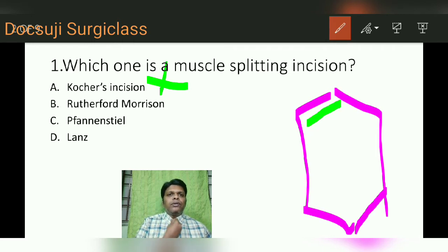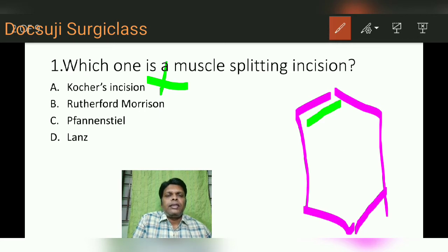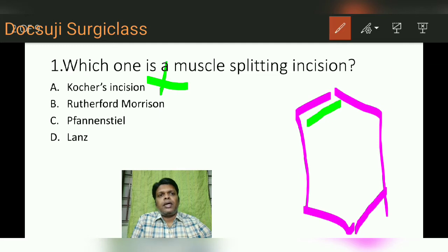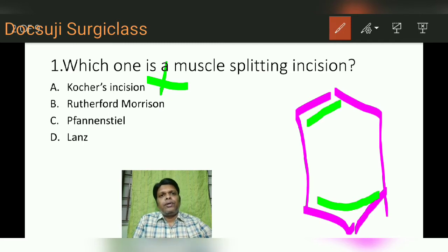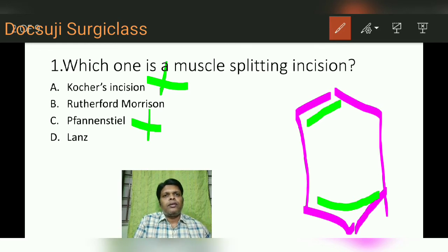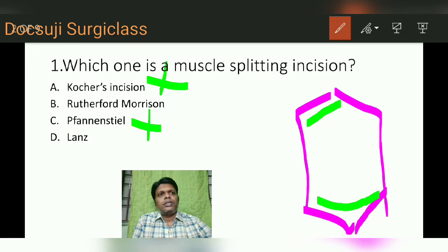Rutherford Morrison and Layens incision will be discussed in the upcoming slides. Option C, Fenn and Steele incision, is a transverse incision placed in the suprapubic region, commonly used in gynecological surgeries. There also you cut the muscle. So these two options are ruled out, leaving Rutherford Morrison and Layens incision.